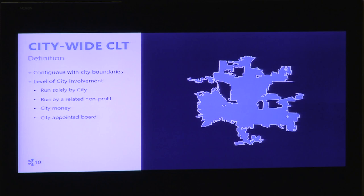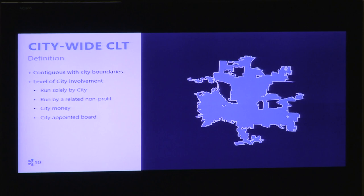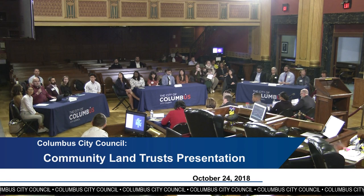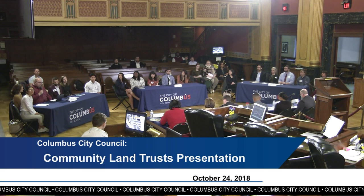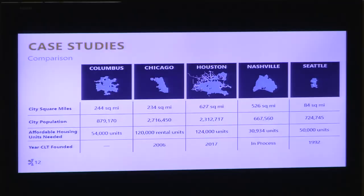The basics of how a CLT functions are relatively similar regardless of regional, citywide, or neighborhood scope. However, the citywide approach has some key distinctions: boundaries will align with the city itself and there will be some initial or perpetual city involvement. The case studies we selected were Chicago, Houston, Nashville, and Seattle — cities with a similar geographic and demographic scope to Columbus, all of which have identified a large need for affordable housing units.